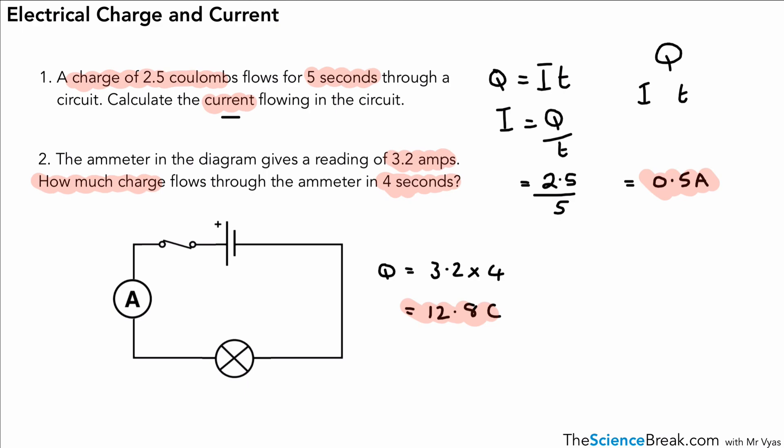So most important thing to remember here is that the current is a flow of charge. And that charge is found on electrons. But we can't just measure it on one electron. We measure it on a whole bunch of electrons. And that's called one coulomb of charge. So current is the flow of charge measured in coulombs per second or amps.